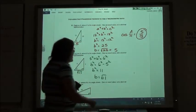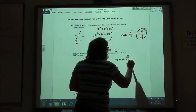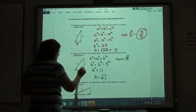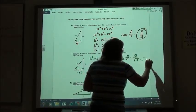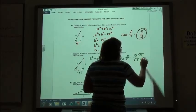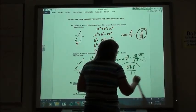We want to do the tangent. Tangent is opposite over adjacent. So opposite is 5, adjacent is square root of 11. We have to rationalize that denominator. So 5 square root of 11 over 11.